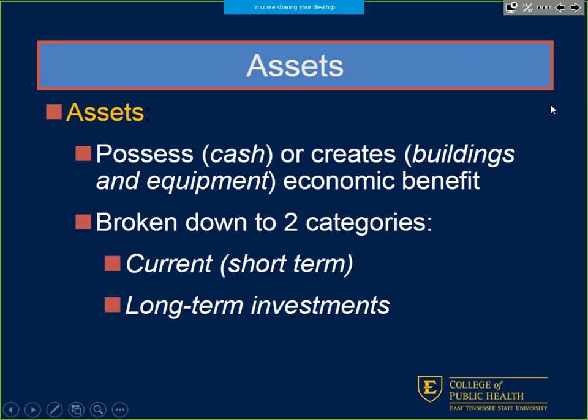Assets are anything that creates or enables us to possess some economic benefit. Current assets are more short-term — any cash on hand or short-term investments that last a year or shorter. Long-term investments include leases on land, buildings, and property equipment — for example, a lease for 10 or 15 years would be a long-term investment.